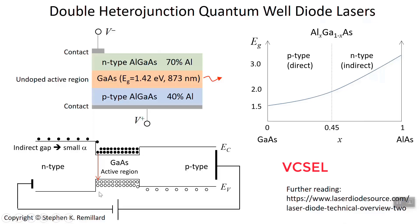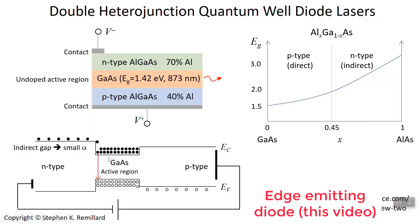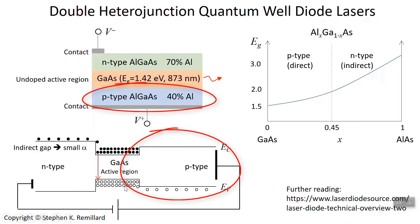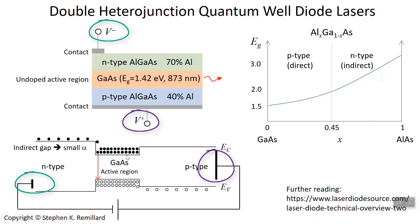But anyway, I'm describing the simpler idea of an edge emitting diode. Look at the band diagram for this. So you have the n-type on top here. It's 70% aluminum. And you have the p-type over here, and it's 40% aluminum. And we put the negative voltage on the n-type and the positive voltage on the p-type. That way it's forward biased. So the positive voltage goes there.